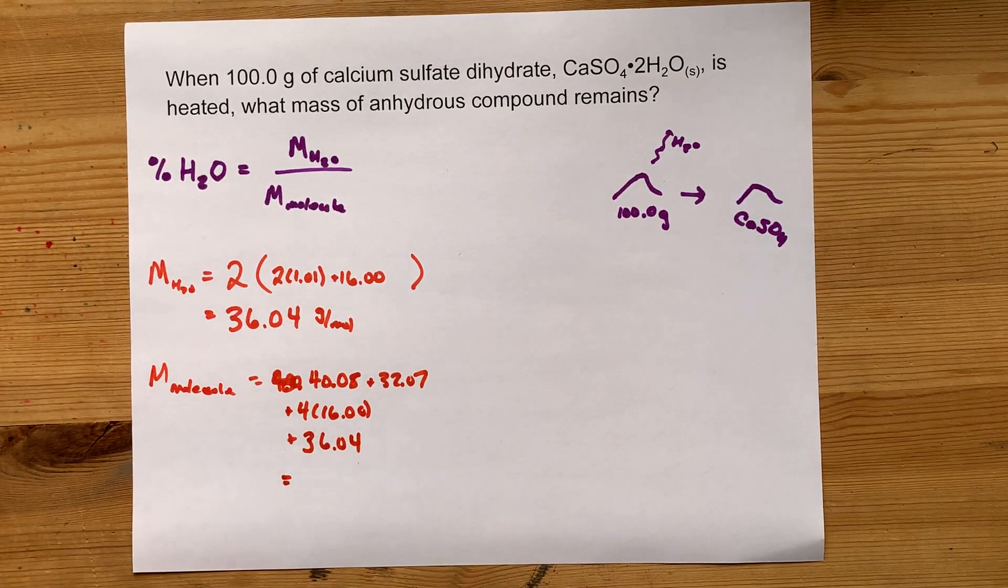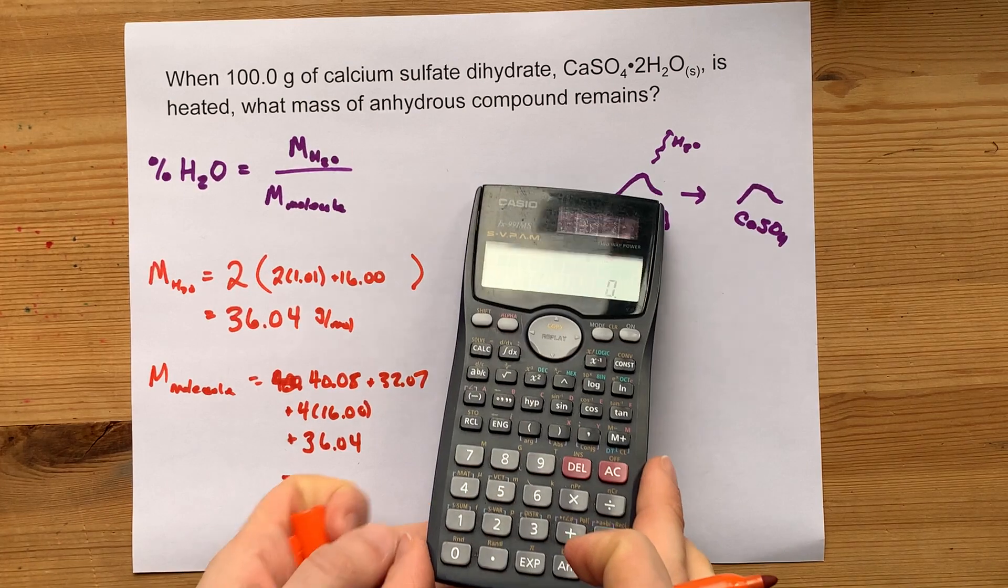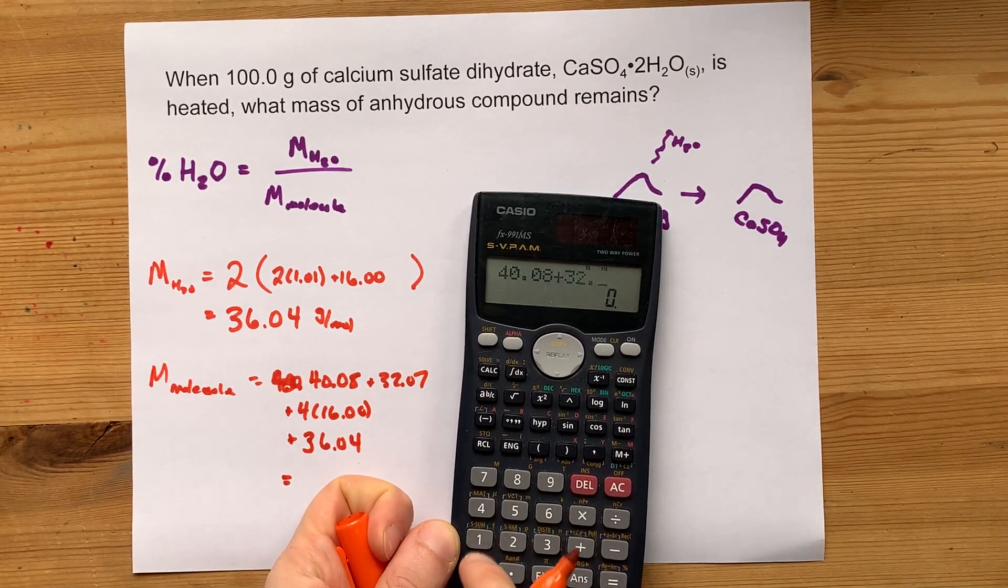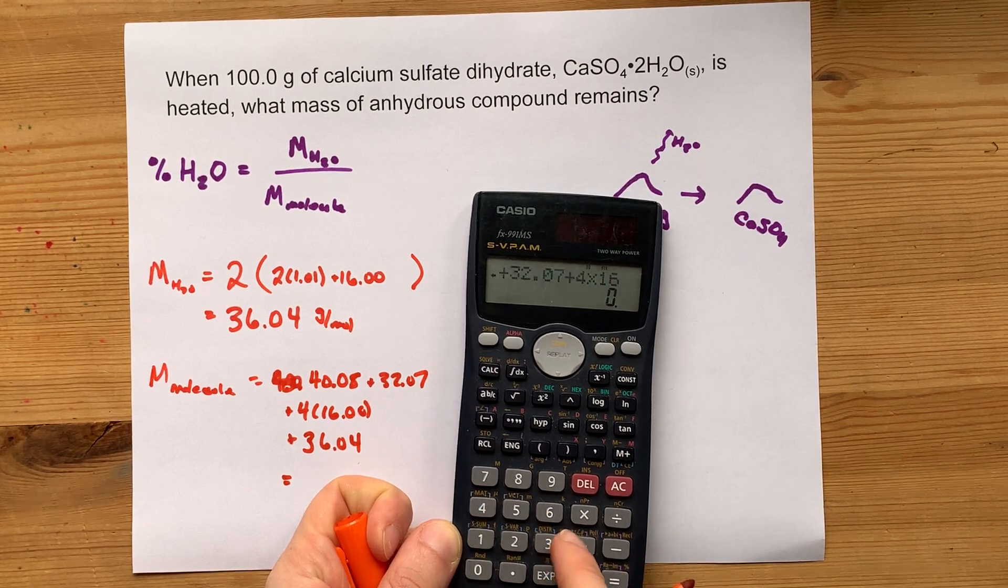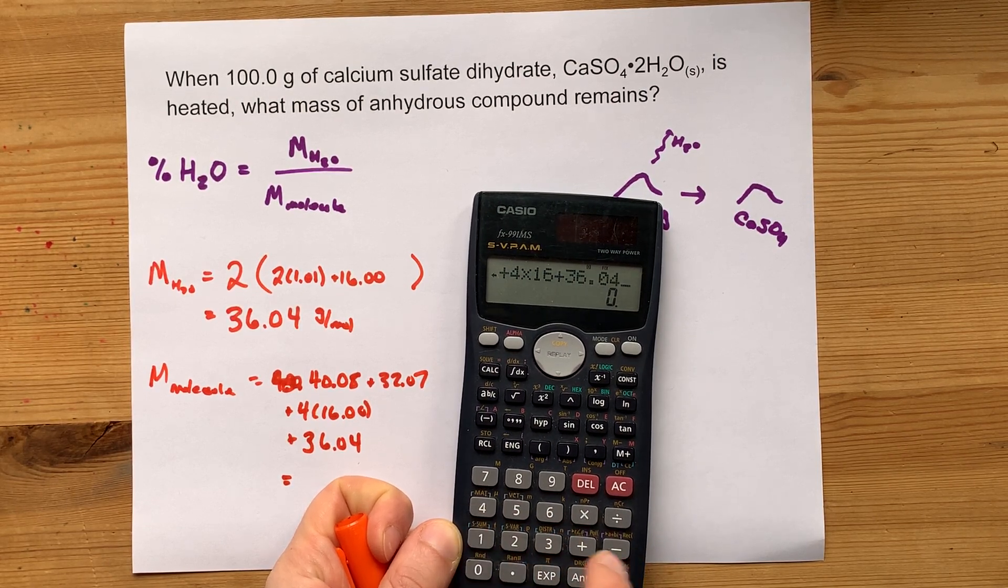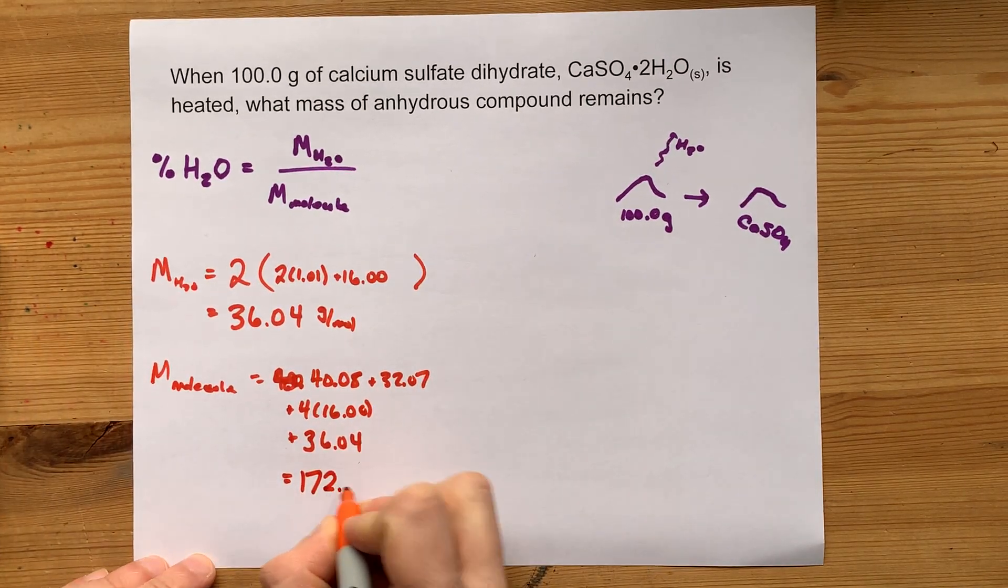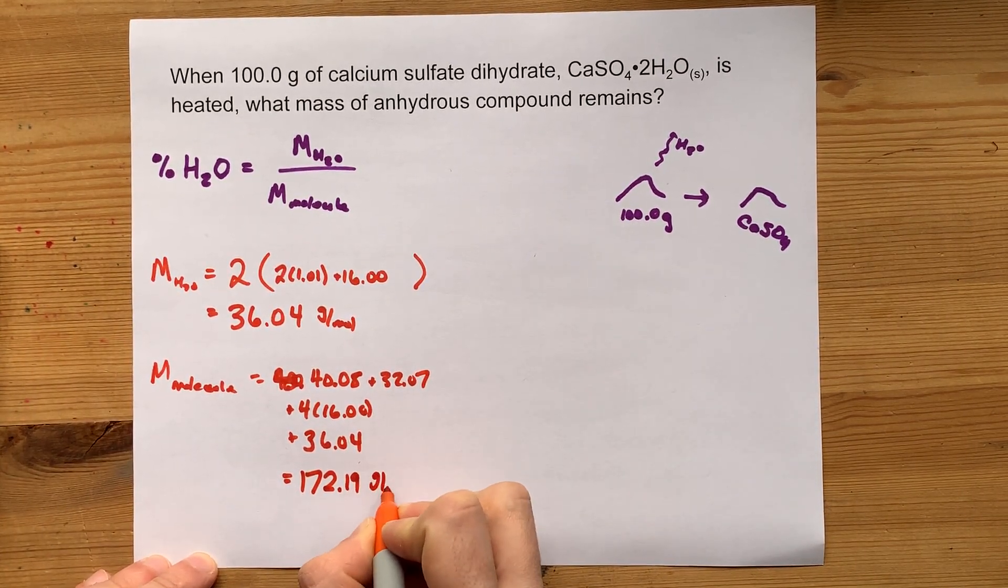When I do all that math on my calculator, I'm actually going to need a calculator for that one: 40.08 plus 32.07 plus four times 16 plus 36.04. I get 172.19 grams per mole.